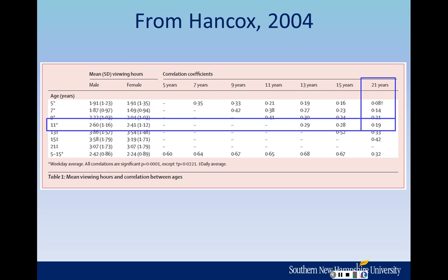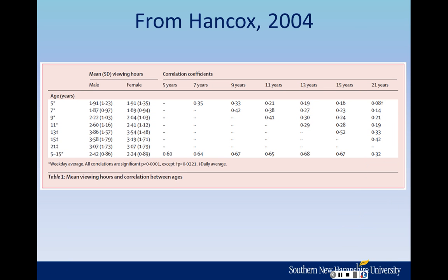Please note that you could take that correlation, square it, and multiply by 100 to get the R-squared. That would answer the question: how much variability in TV viewing at 11 years can be accounted for by TV viewing at 21? That would be answered with an R-squared. Take that number r — these are correlations, so these are all R's — and you square it.